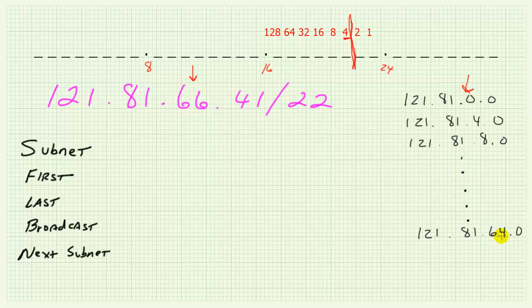To get there quicker: take the interval, which is four; take the value of the interesting octet, which is 66; divide by the interval: 66 divided by four is 16.5. Discard the .5 remainder, then multiply back by the increment of four. 16 times four is 64, and that gives us the value for the third octet of the current subnet — so the current subnet is 121.81.64.0.